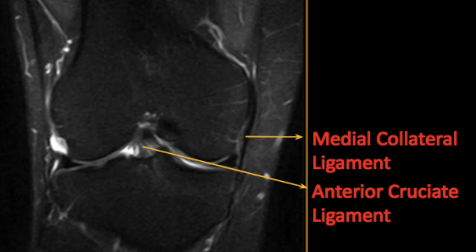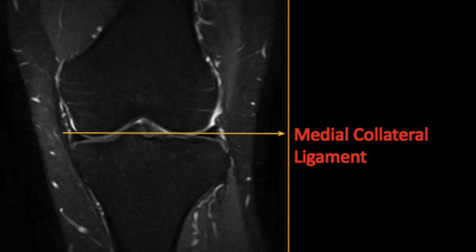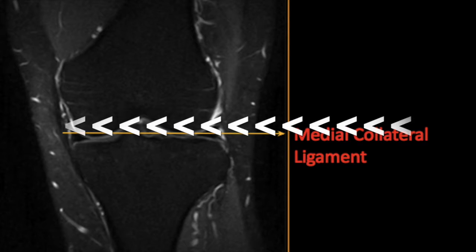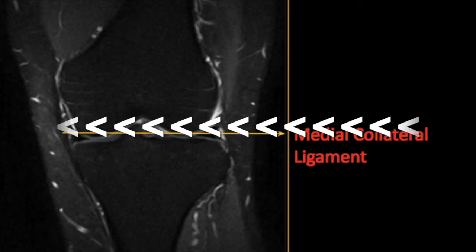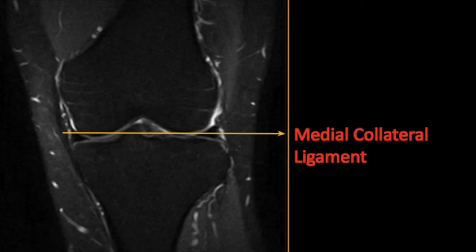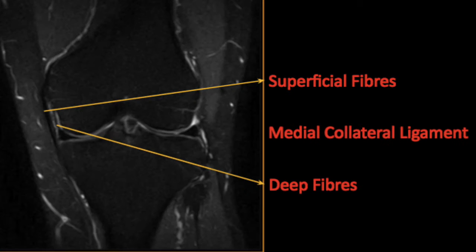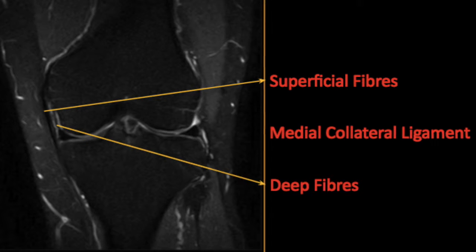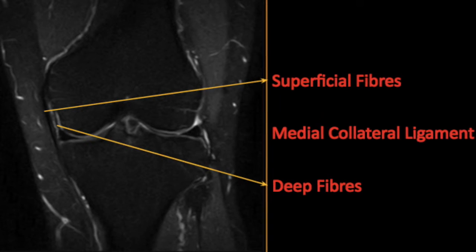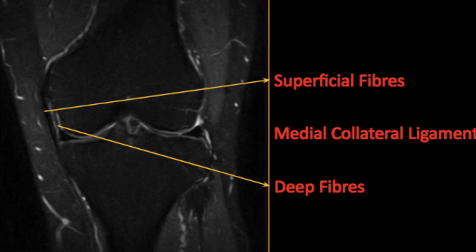Coming to the collateral ligaments. The medial collateral ligament, also known as the tibial collateral ligament, is the main ligament on the medial side of the knee, primarily resisting valgus forces. It extends from the medial epicondyle of the femur to the medial condyle of the tibia. The fibers of the posterior part of this ligament are short and incline backwards, inserting into the tibia just above a groove for the semimembranosus tendon.